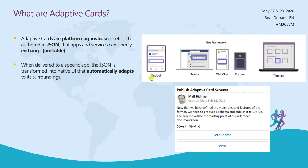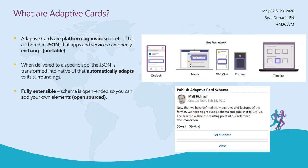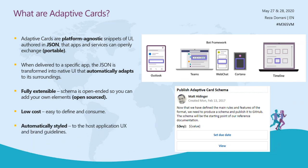When this JSON is delivered to a specific application, the adaptive card natively adapts — that's why it's called adaptive. It adapts to its surroundings. Whether posted to Outlook, Teams, Web Chat, Cortana, Windows Timeline, or other services, the card adapts to the host. These cards are fully extensible, open sourced, extremely low cost, easy to design and consume, automatically styled per the host application's UX and brand guidelines, and declarative — no coding is needed.